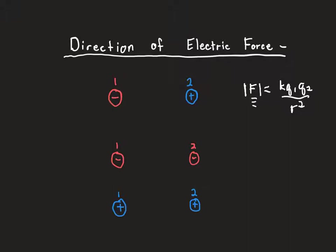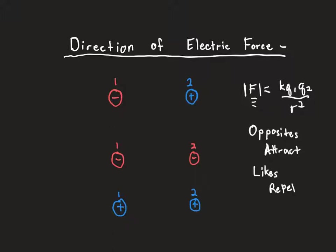If I want to know the direction, I have to look at the signs of the charges. We have the old adage: opposites are going to attract. We can use this to figure out what direction the forces are going to go. If opposites attract, then likes are going to do the opposite — likes are going to repel. We remember this to figure out what direction the force goes after we use Coulomb's Law to find the magnitude.